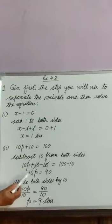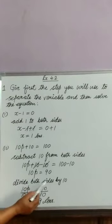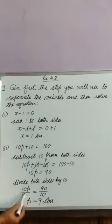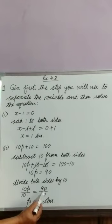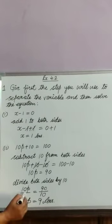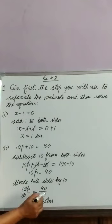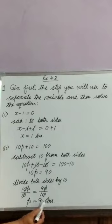Here 10 is multiplied, now we divide both sides by 10. 10p divided by 10 is equal to 90 divided by 10. 10 cancelled with 10. p is equal to 9 is the answer.